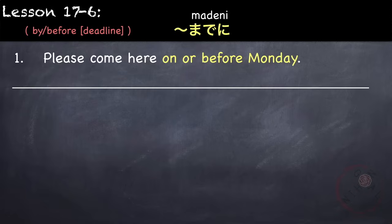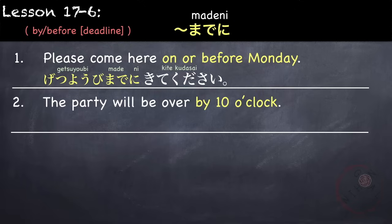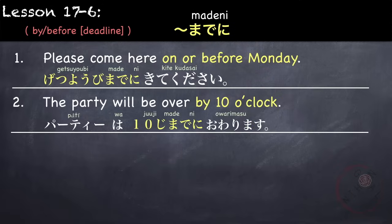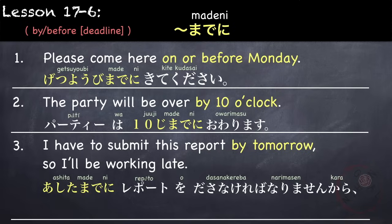Examples of made ni: 'Please come here on or before Monday' — Getsuyobi made ni koko ni kite kudasai. 'The party will be over by 10 o'clock' — the party might end earlier but will not go beyond 10 — paatii wa juuji made ni owarimasu. 'I have to submit this report by tomorrow so I'll be working late' — Ashita made ni repooto wo dasanakereba narimasen kara zangyou shimasu.